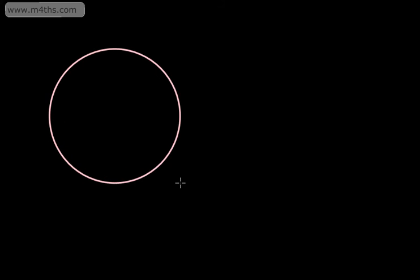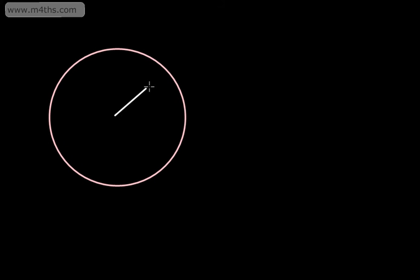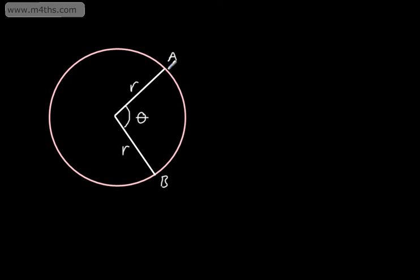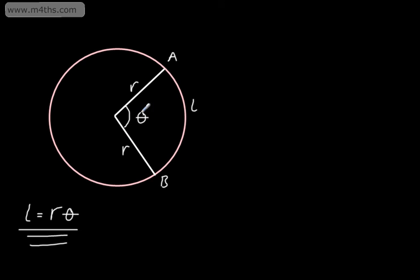In this video, we're going to look at finding the length of an arc. Starting with a circle, we have a centre and a radius. I'll put another radius here, with point A and point B. If we have an angle theta measured in radians, a radius, and an arc length from A to B — the minor arc of L — we can say that L, the arc length, is equal to R theta. To find the arc length, simply multiply the radius by the size of the angle when the angle is in radians.